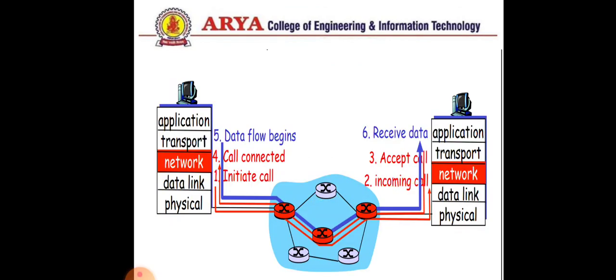This is the connection between a source and a destination. When a source sends data, it first wants to establish a connection with the receiver. It initiates a call, and this call is accepted by the receiver. A connection between source and destination is built. After that, data flow begins from the source side, and this data is received by the receiver.